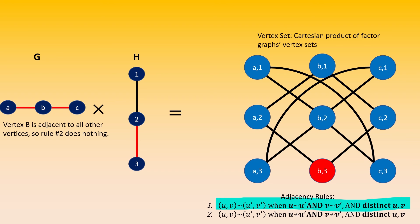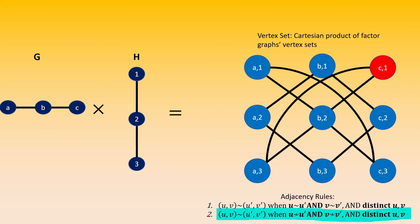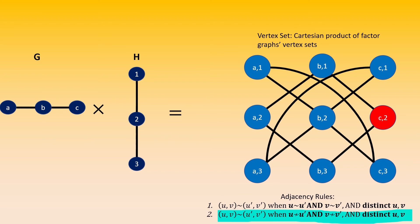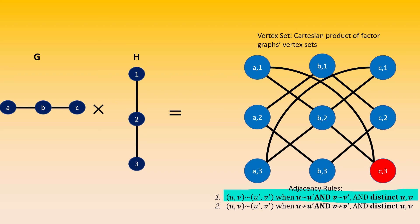On to the vertices with left entry C. Feel free to pause and try these yourself, and then I'll reveal the answers. By the first rule, C1 is adjacent to B2. By the second rule, C1 is adjacent to A3. By the first rule, C2 is adjacent to B1 and B3. The second rule does not produce any adjacencies for C2, because the right entry of C2 is adjacent to all possible distinct right entries. By the first rule, C3 is adjacent to B2. And by the second rule, C3 is adjacent to A1. We're done. This is the modular product of G and H.